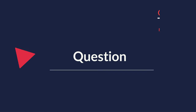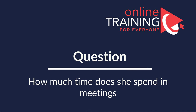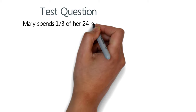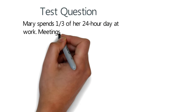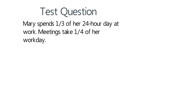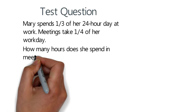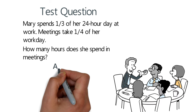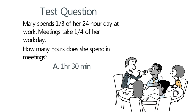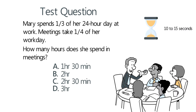Here's an interesting question about planning your day-to-day work. Mary spends one-third of her 24-hour day at work. Meetings take one-fourth of her workday. How many hours does she spend in meetings? Choices: A) 1 hour 30 minutes, B) 2 hours, C) 2 hours 30 minutes, and D) 3 hours. Give yourself 10 to 15 seconds.